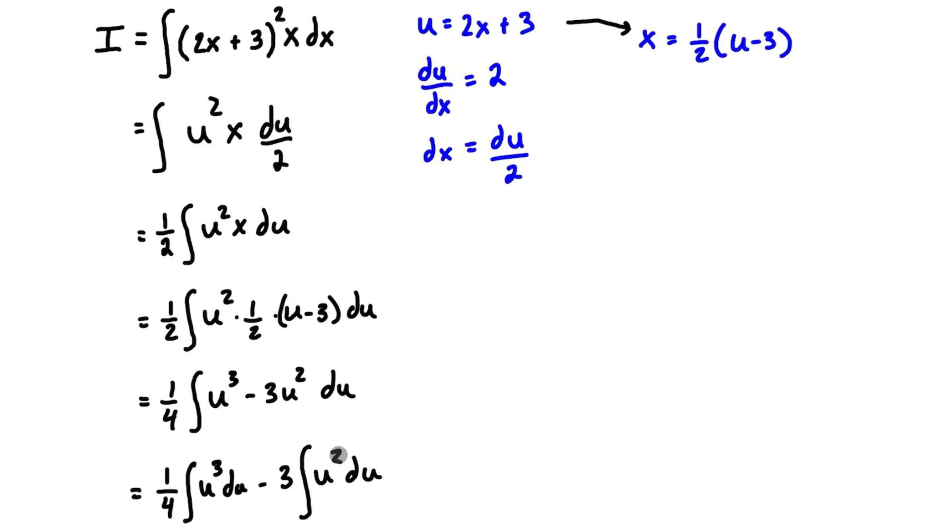Carrying on, we're going to have ¼ times u⁴/4 minus ¾ times u³/3, all plus one single arbitrary constant. We can combine them all into one. We need to simplify this a little bit more, so we have 1/16 times u⁴ minus ¼u³ plus that arbitrary constant.